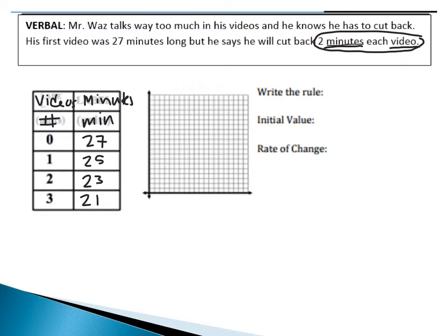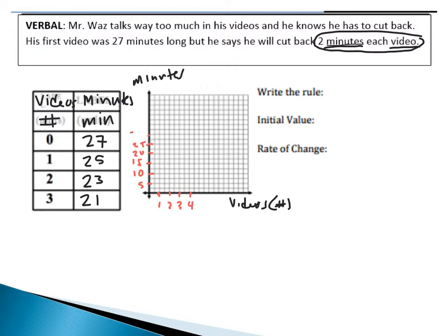What we want to do is represent this table on a graph. On this graph, we're going to put the number of videos on the x-axis, and the number of minutes up here on the y-axis. My graph is not labeled, so I'm going to label these things. On the x-axis I'll go one, two, three, four and so on, skipping every other one. For the y-axis, minutes go all the way up to 27, so I'm going to count by fives: 5, 10, 15, 20, 25, 30.